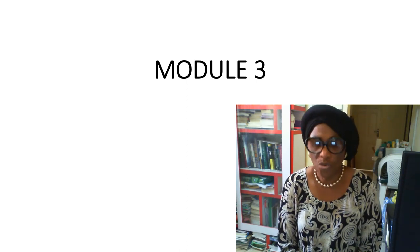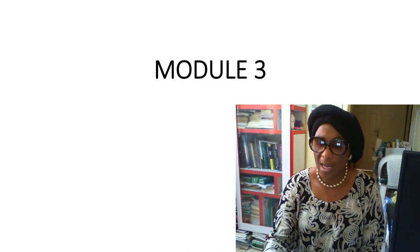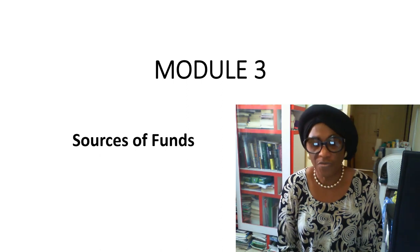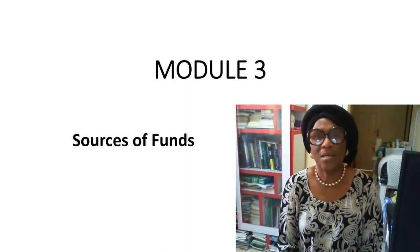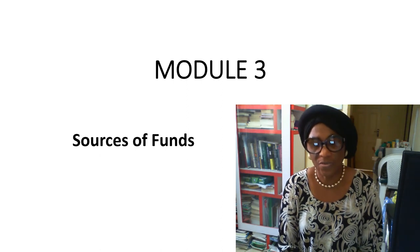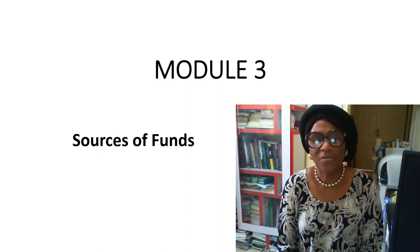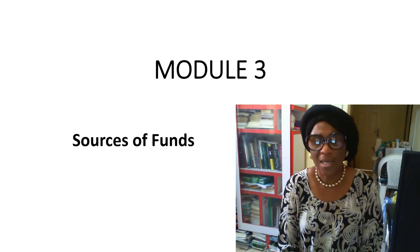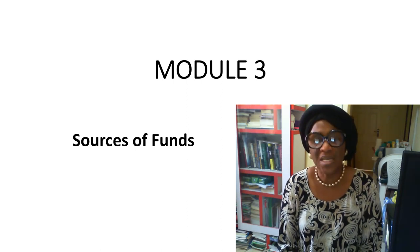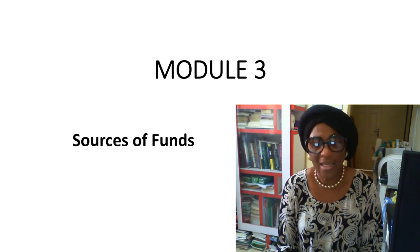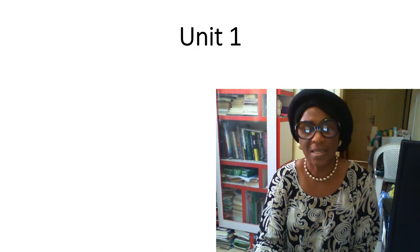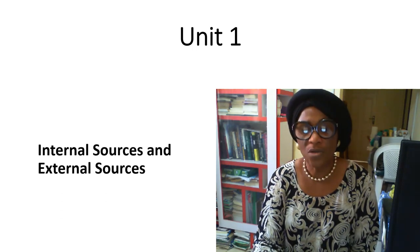We are looking at Module 3 of business creation and growth, which is the sources of business funding. When we talk about business plans, we say that money is not the first thing to look for. In the same way, if you have a wonderful plan for execution and you don't have money for funding, that's the same tragedy.